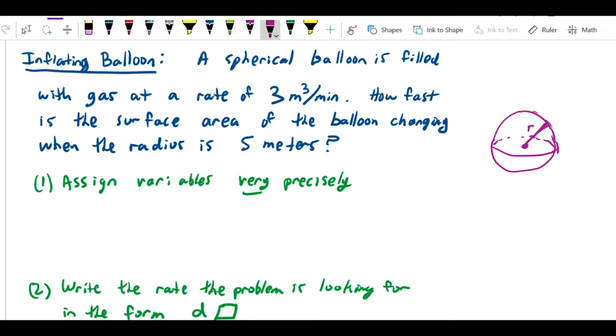Let's assign variables very precisely. What appears in the problem: V is volume, but I'm not going to take volume as a precise definition. I'm going to say it's volume of the balloon in cubic meters. There's also a radius, which is the radius of the balloon in meters.